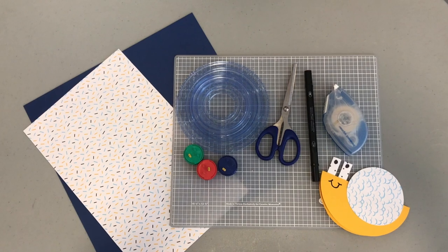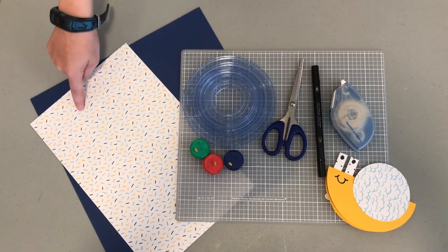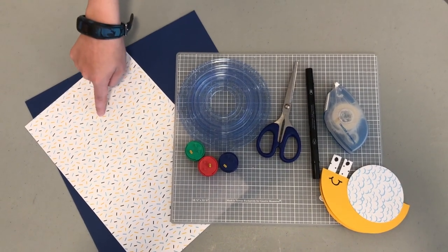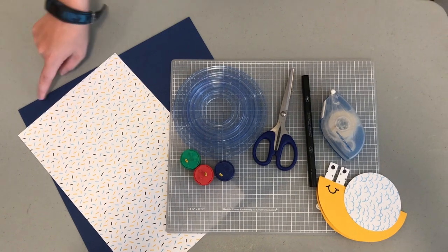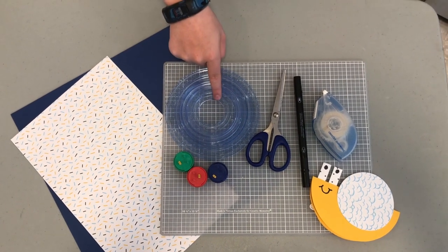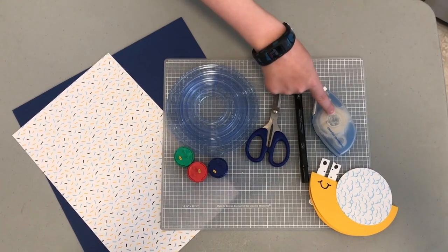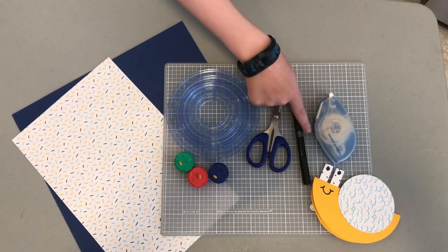To make these snails you will need at least two kinds of paper, designer print, cardstock, custom cutting system, adhesive tape runner, a black marker, and scissors.